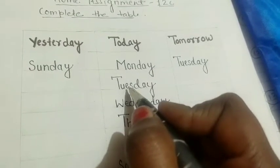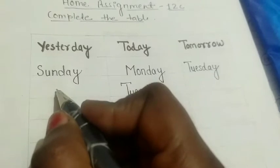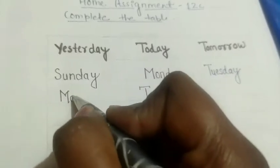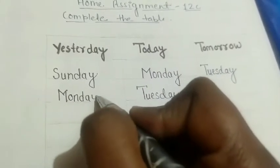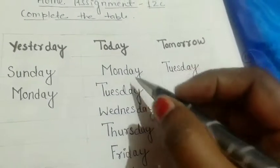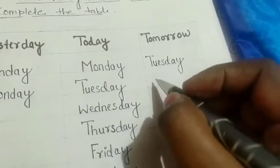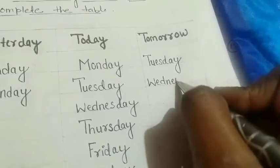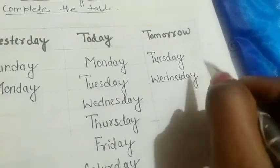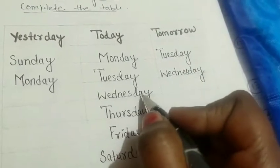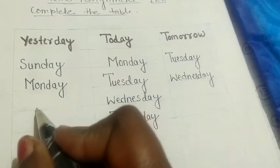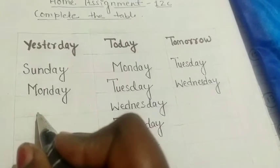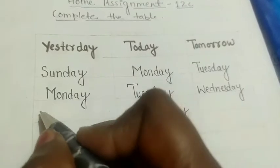Now today is Tuesday. Yesterday was Monday, so write it here: Monday. Today is Tuesday, so tomorrow will be Wednesday.